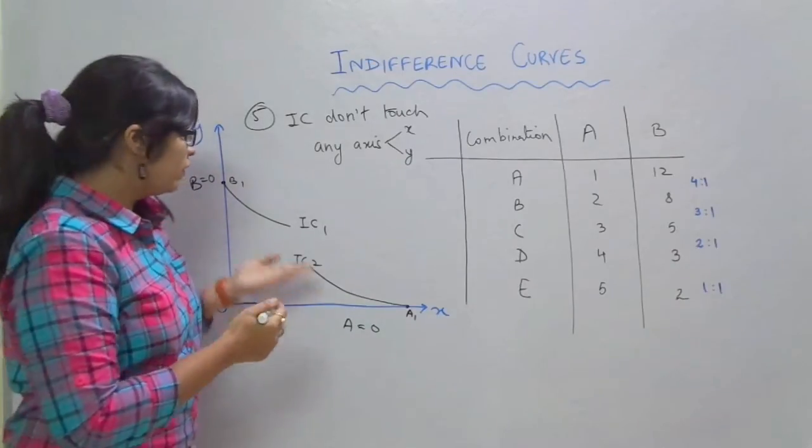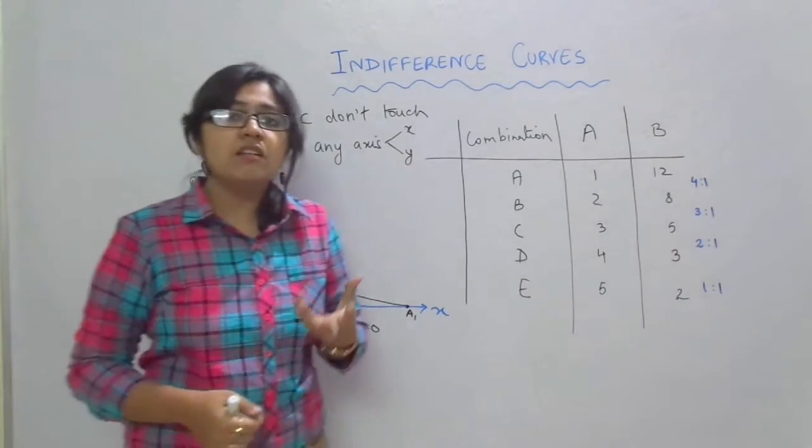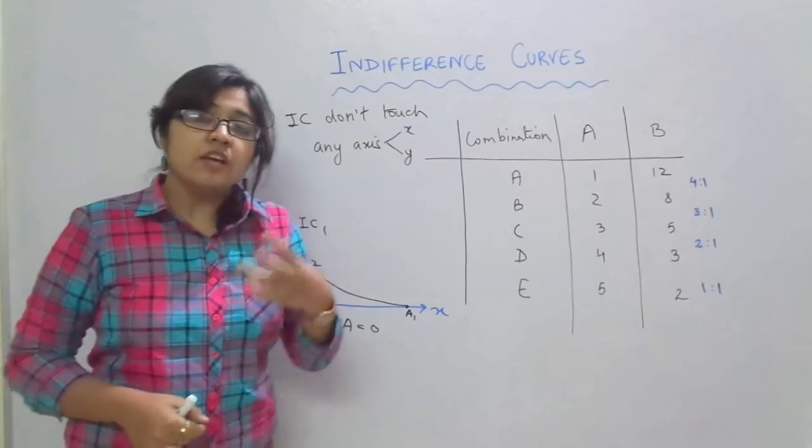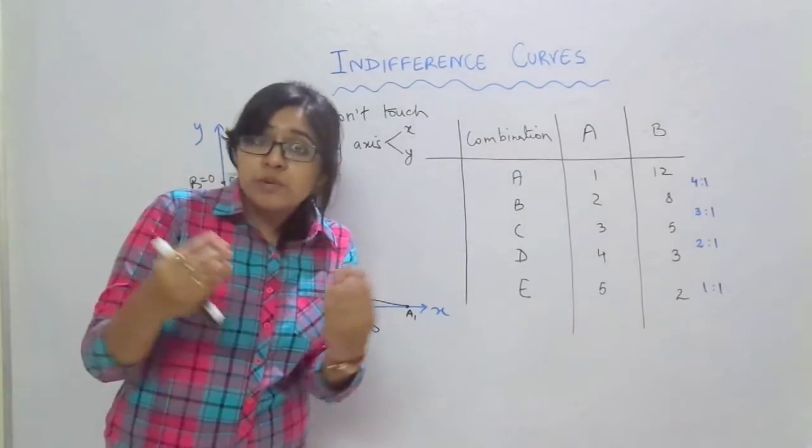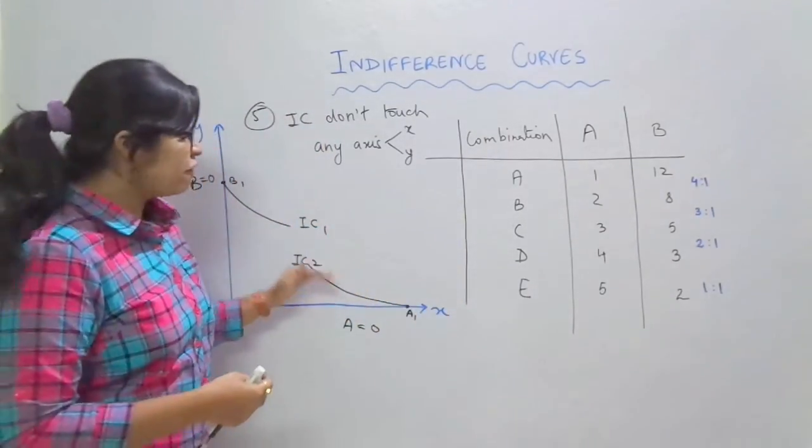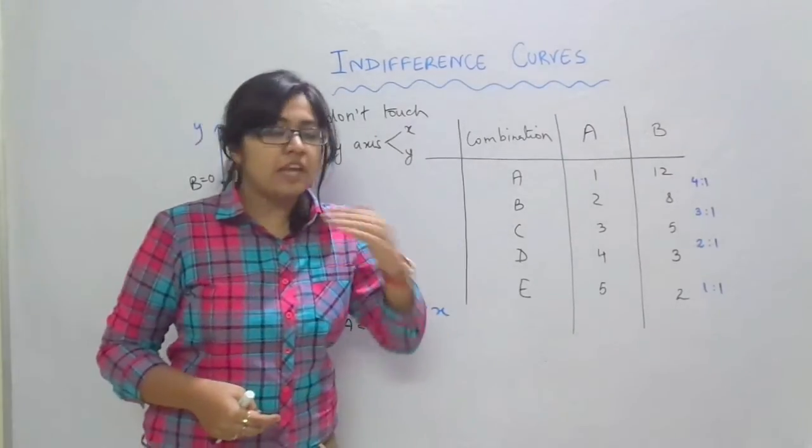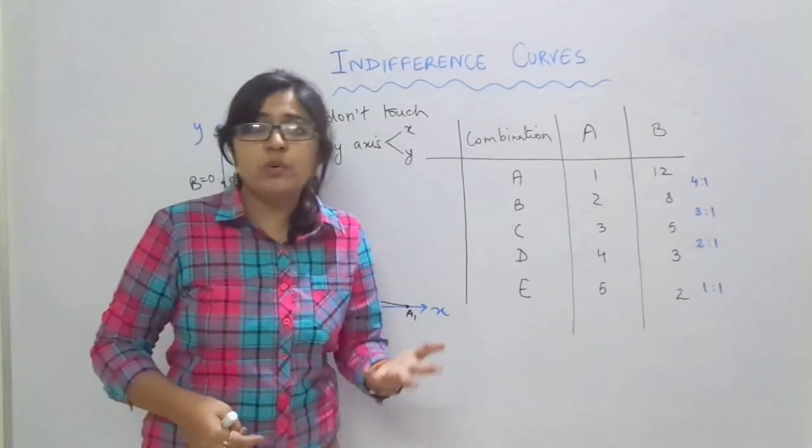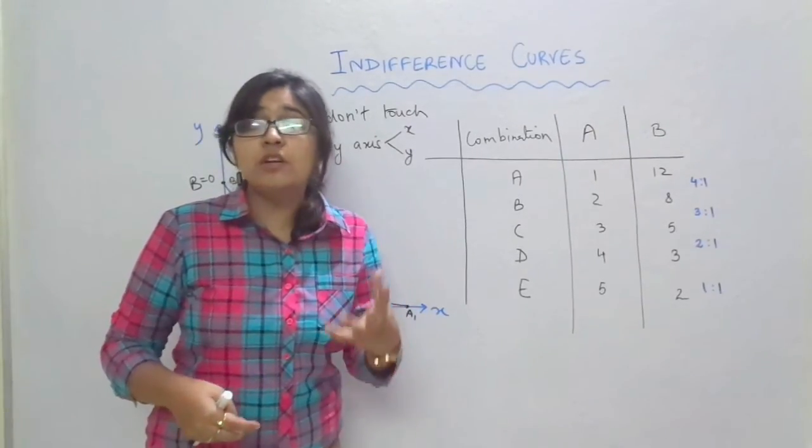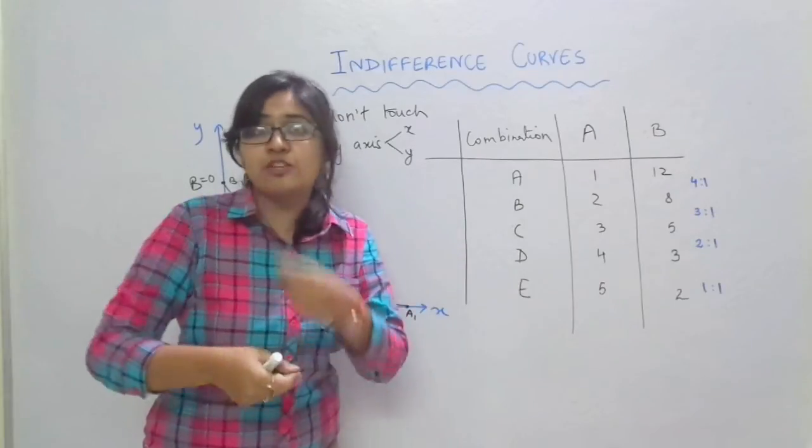Now over here we can again see that the main crux of indifference curve is the curve being a combination of two goods, and if one of the good is 0, if A is 0 or B is 0 in both the cases it does not contribute to being a combination of two goods.